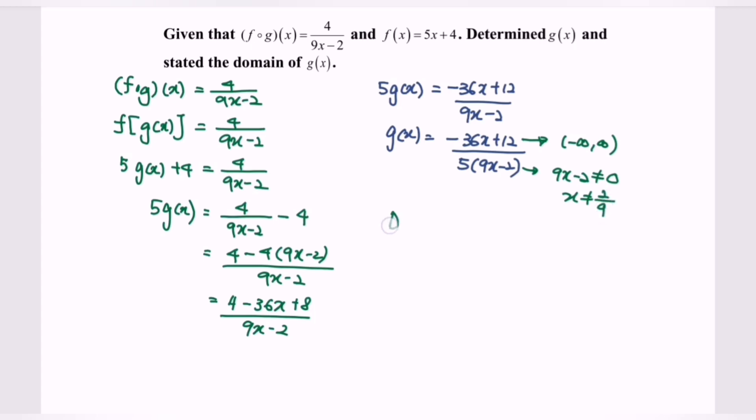So the domain for the function g will be negative infinity to 2/9, union 2/9 to infinity, where 2/9 is not included.